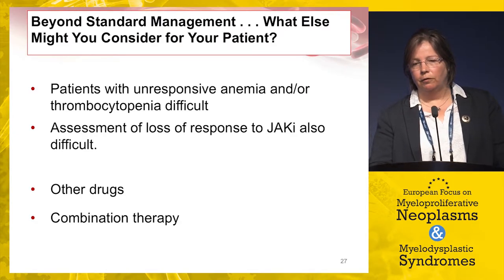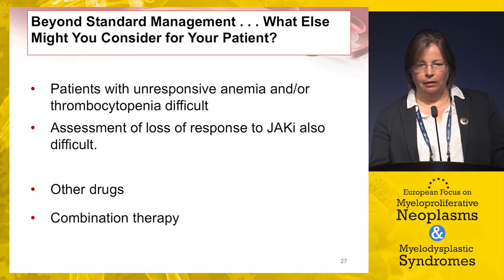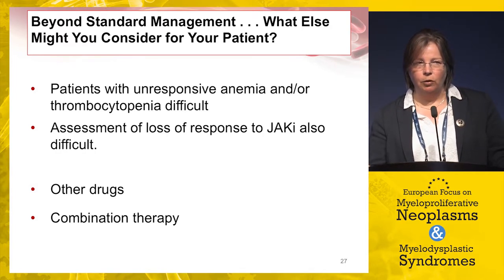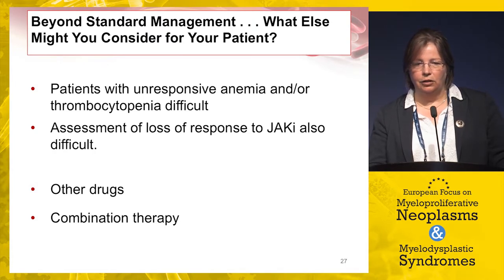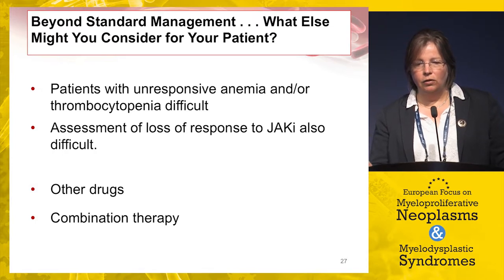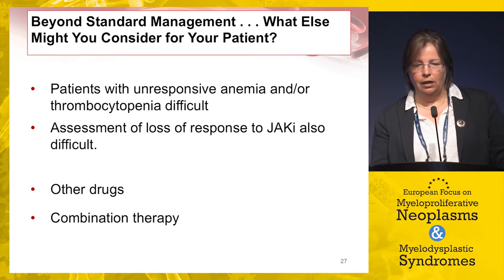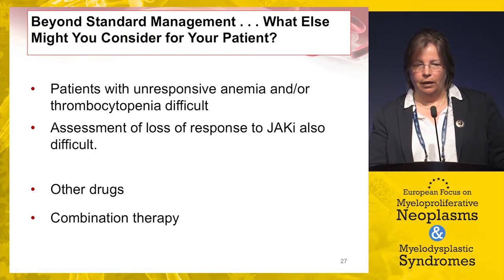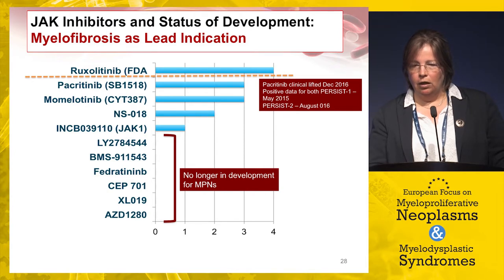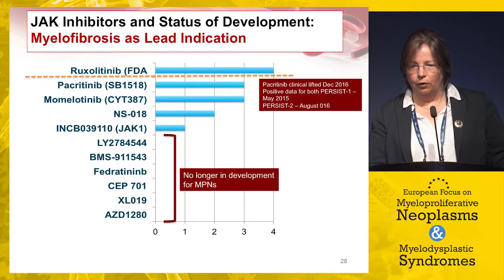Beyond standard management, patients with unresponsive anemia who are not happy with regular transfusions and iron chelation are difficult, as are patients with profound thrombocytopenia. Assessing loss of response to ruxolitinib is also difficult — here we have to think about other drugs, combination therapy, and being innovative. There are other JAK inhibitors, but none available in routine practice.